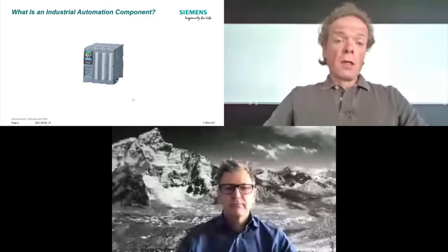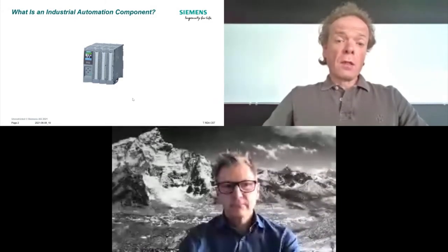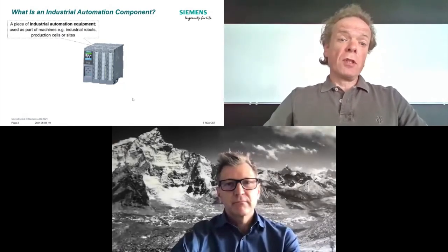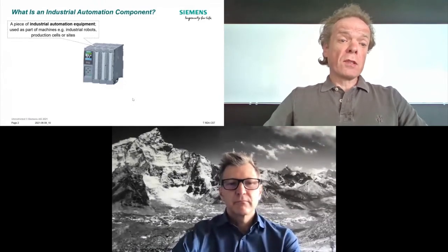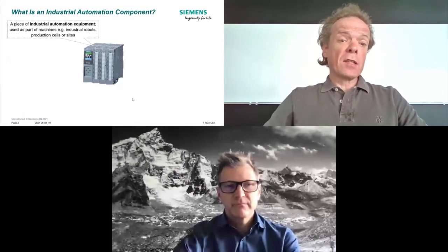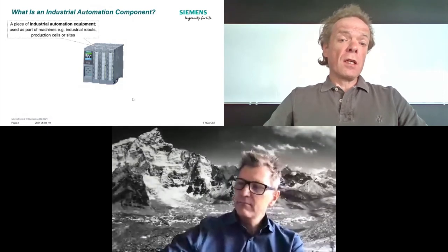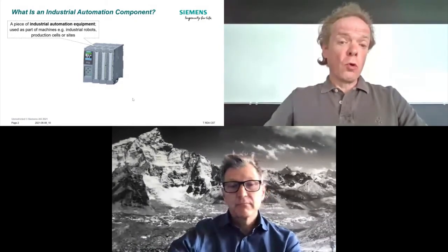What you see here is a distinguished individual industrial automation component. The dimensions are something like 10 centimeters by 10 centimeters by 10 centimeters — so not too big. This is one piece of an industrial automation component, used as part of a machine. A machine could be an industrial robot, which becomes part of production cells or sites. These components, machines, production cells, and sites are used all over manufacturing, utilities, process industries, and so forth — a component ubiquitously used.